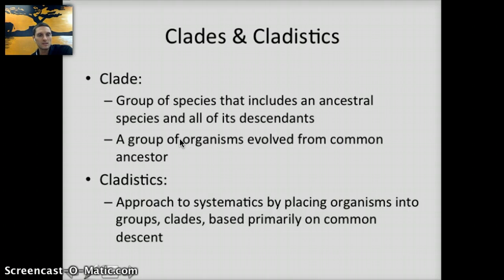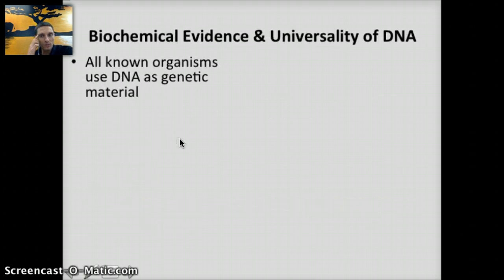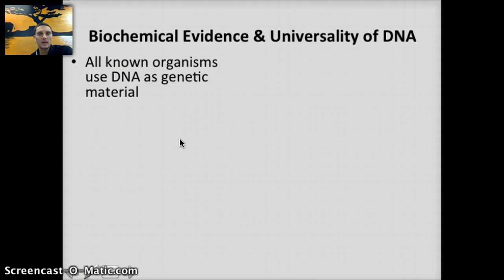A clade is something we use to help organize the process of cladistics. Before we get into how to make clades or cladograms, we want to talk about DNA. Our understanding of how to group organisms has advanced and changed rapidly with new technology, primarily in being able to extract and sequence DNA. The genetic code is universal, meaning that all organisms on the planet use the same four nucleotides.